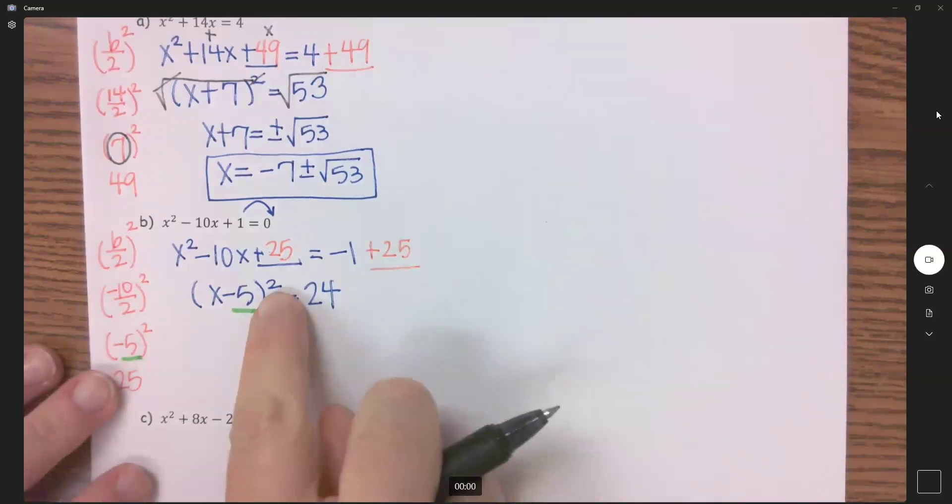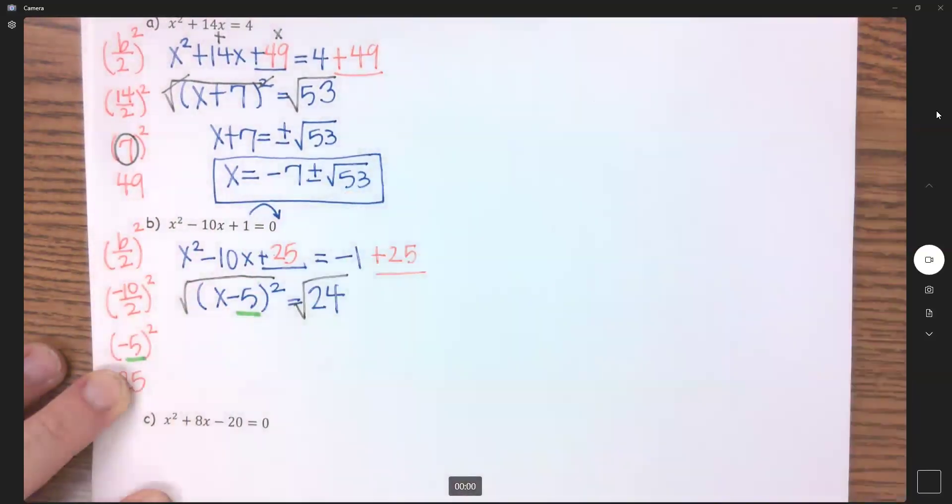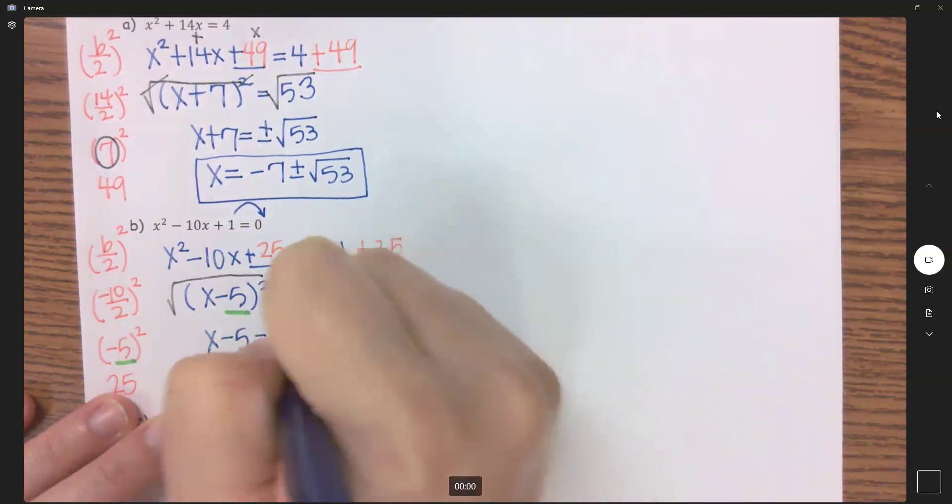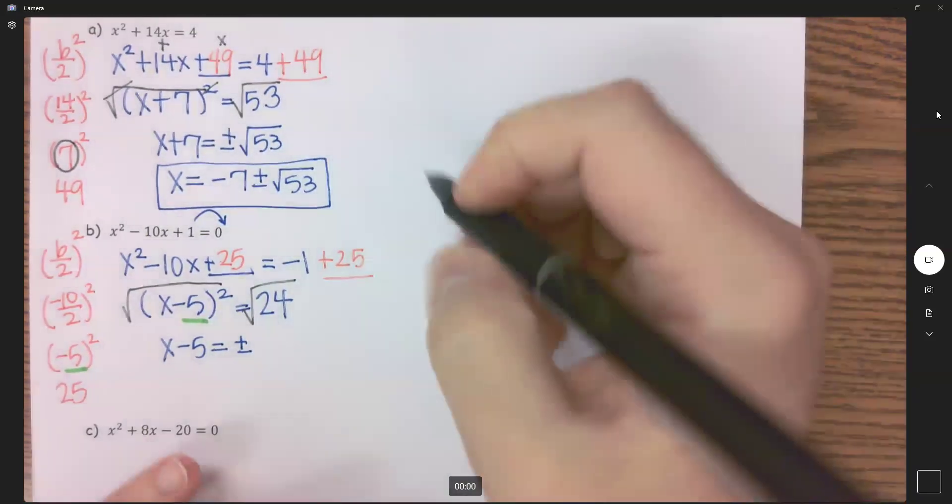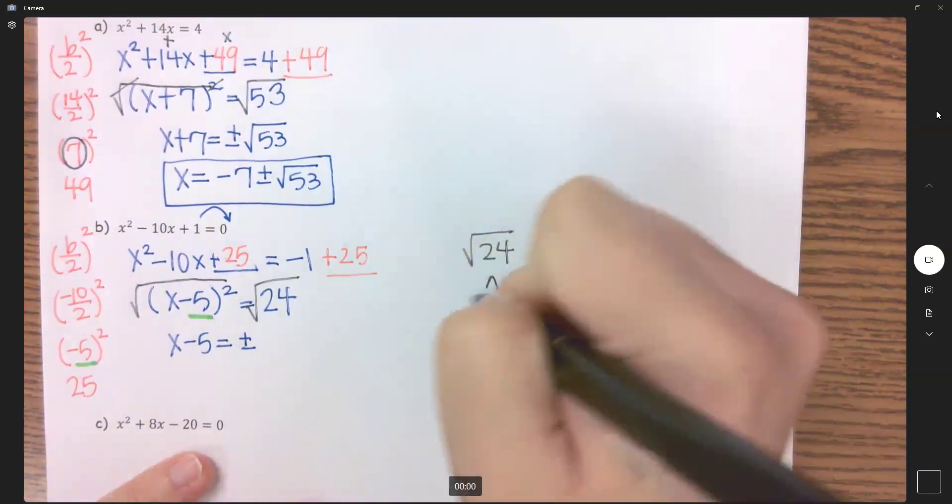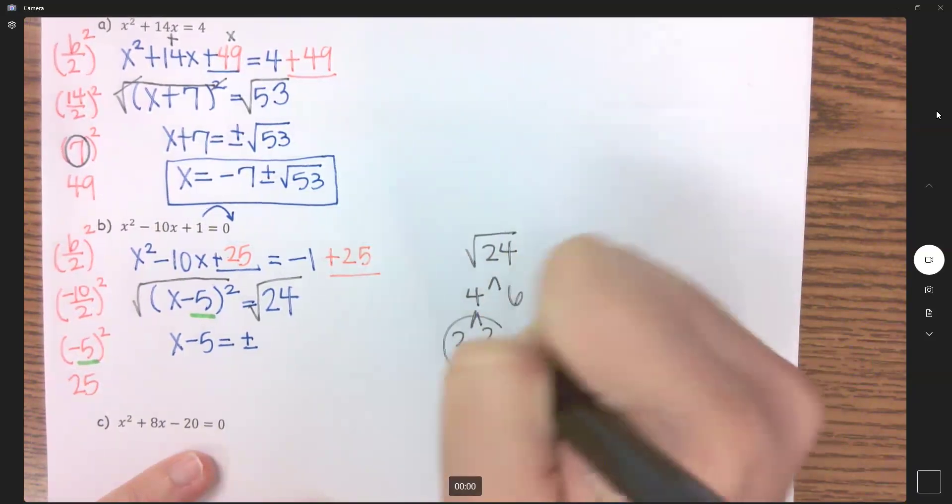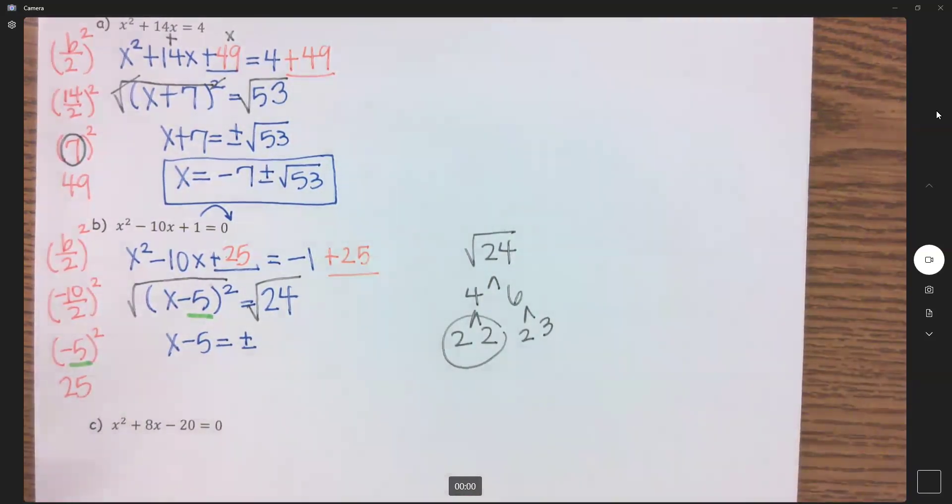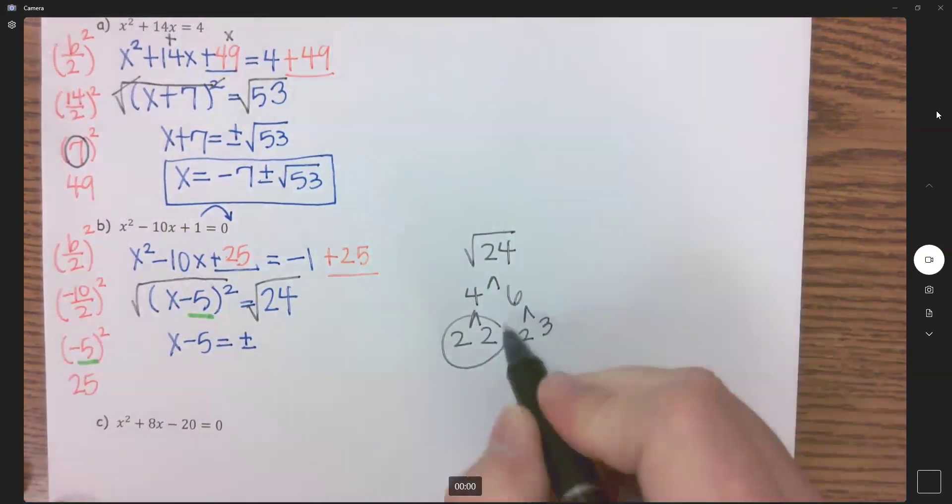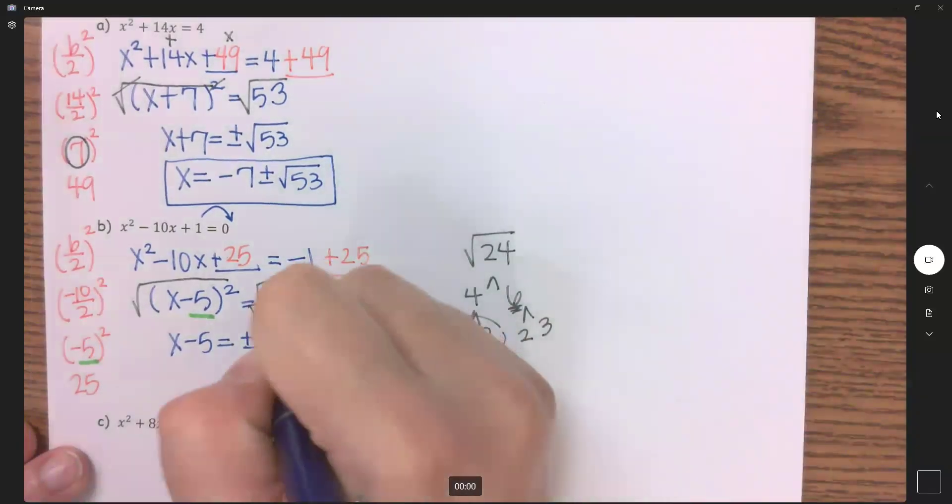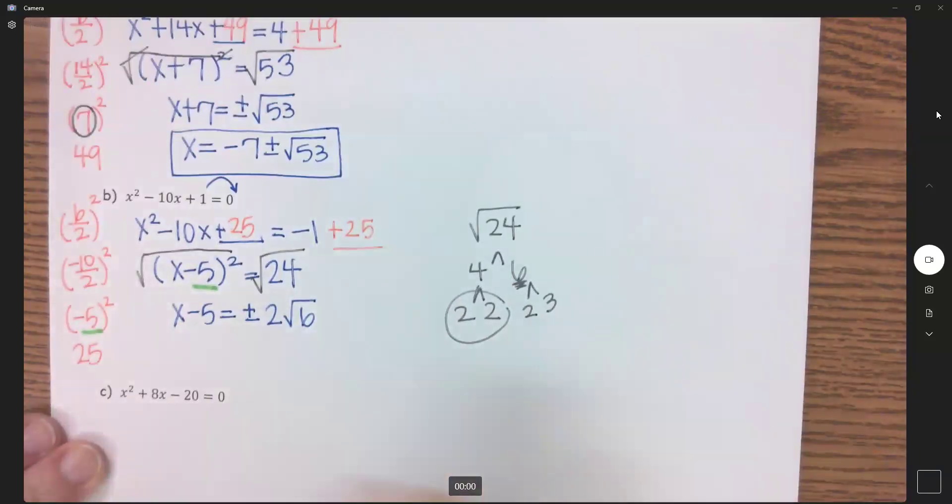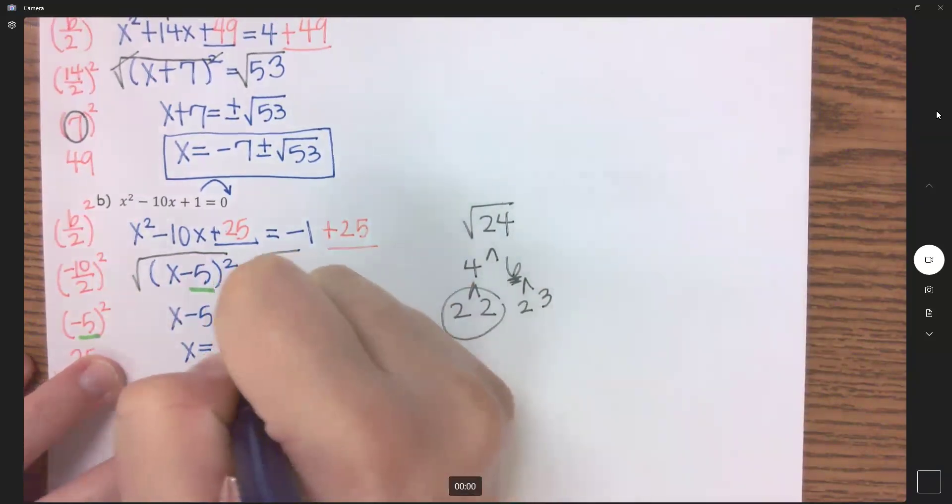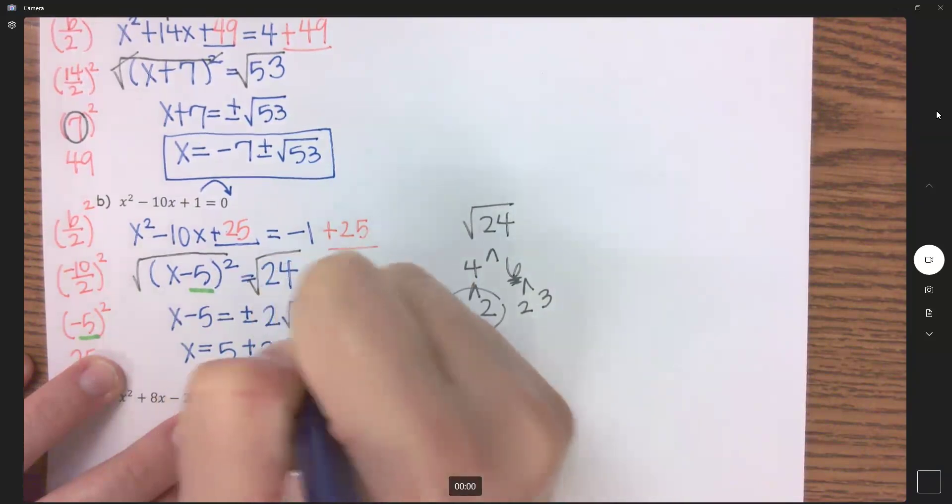And then now, opposite of squaring is to take the square root. So I get x - 5 = plus or minus, and let's figure this out over here. The square root of 24 is 4 and 6, which is 2 and 2, there's my pair. 6 can be broken down to 2 and 3, but I don't have a pair of anything else, so it's just going to get multiplied back up to 6. So this is 2√6. And then my last step is to add that 5 over to get x by itself. So x = 5 ± 2√6.